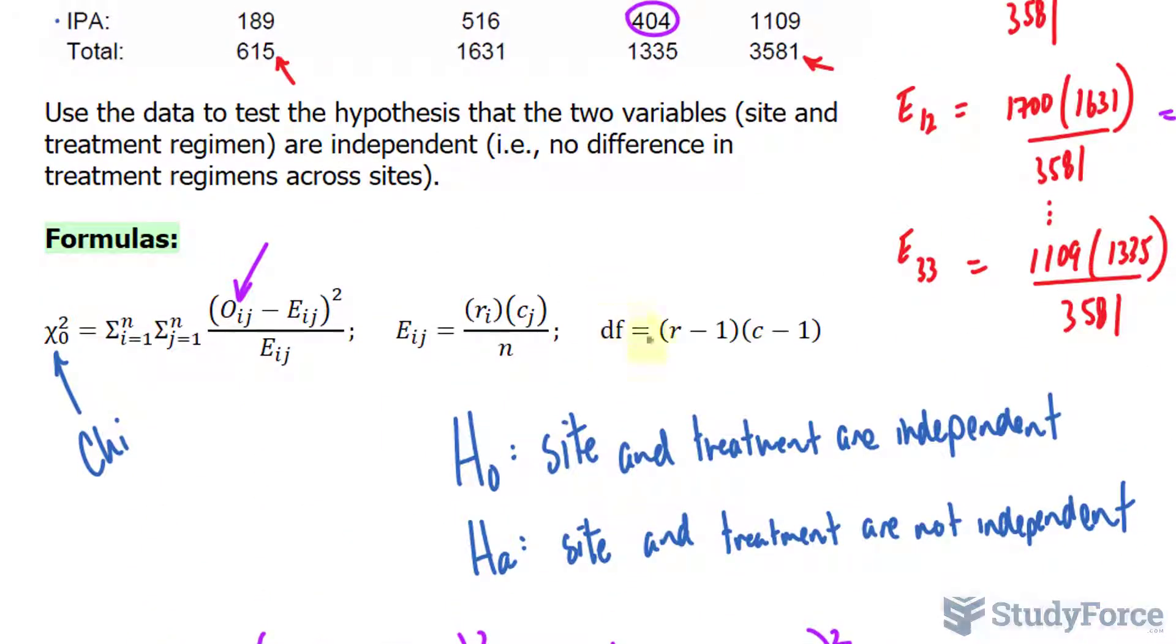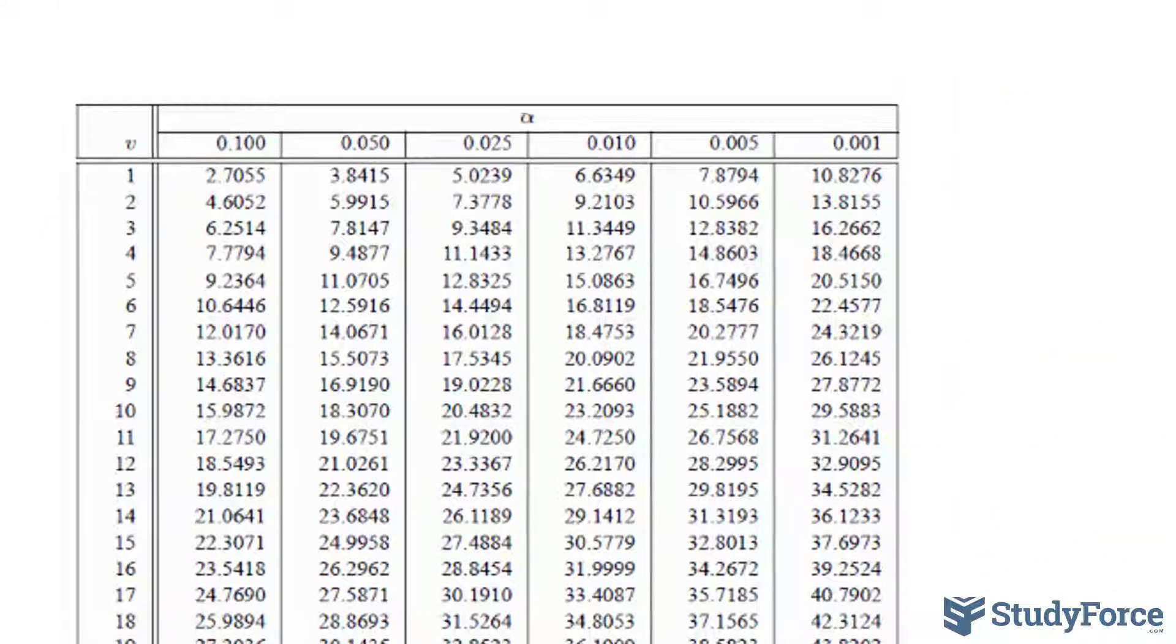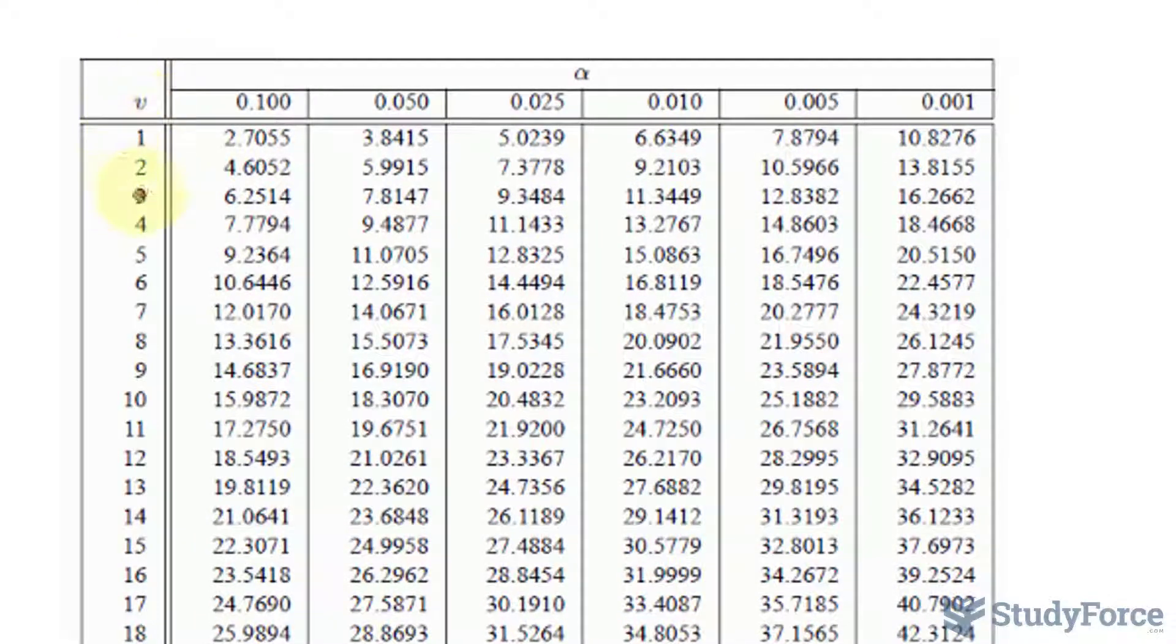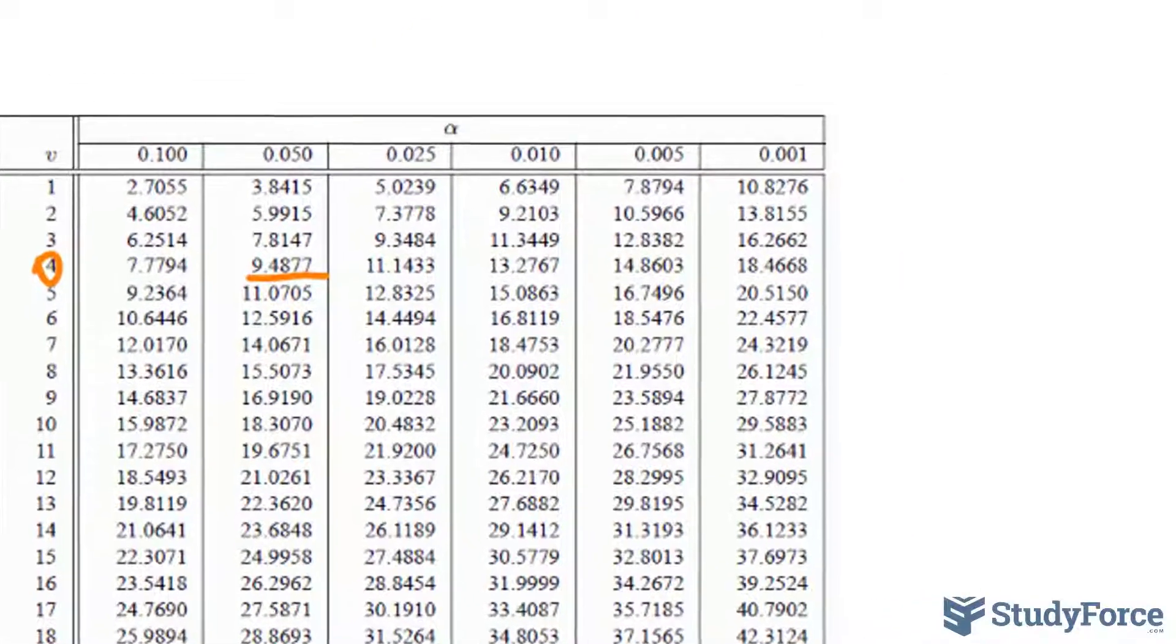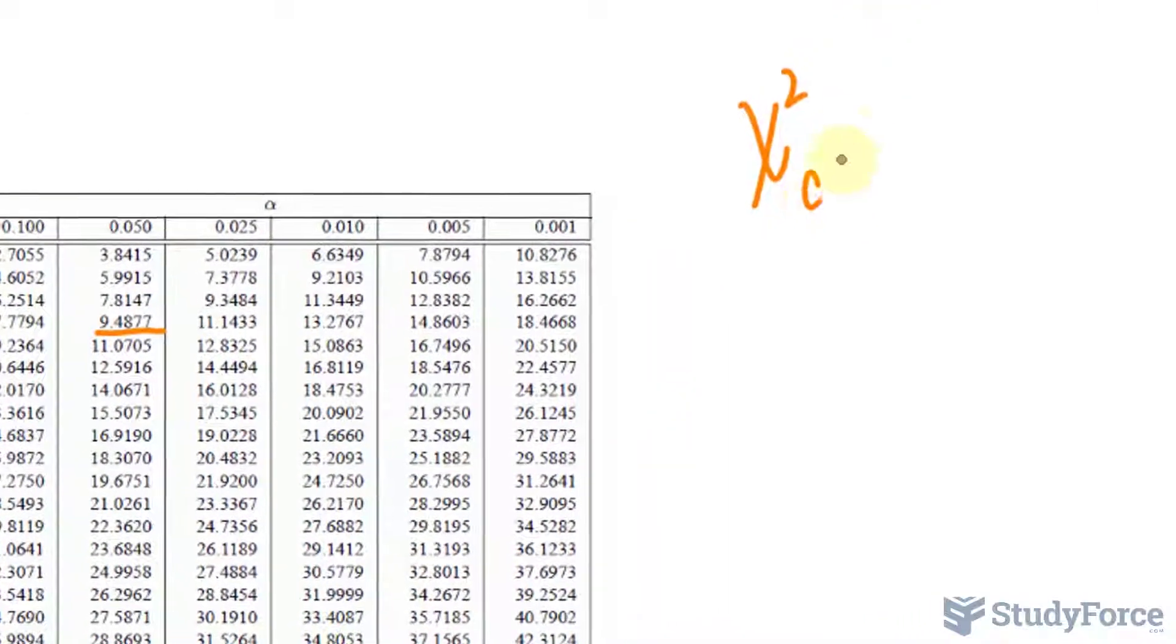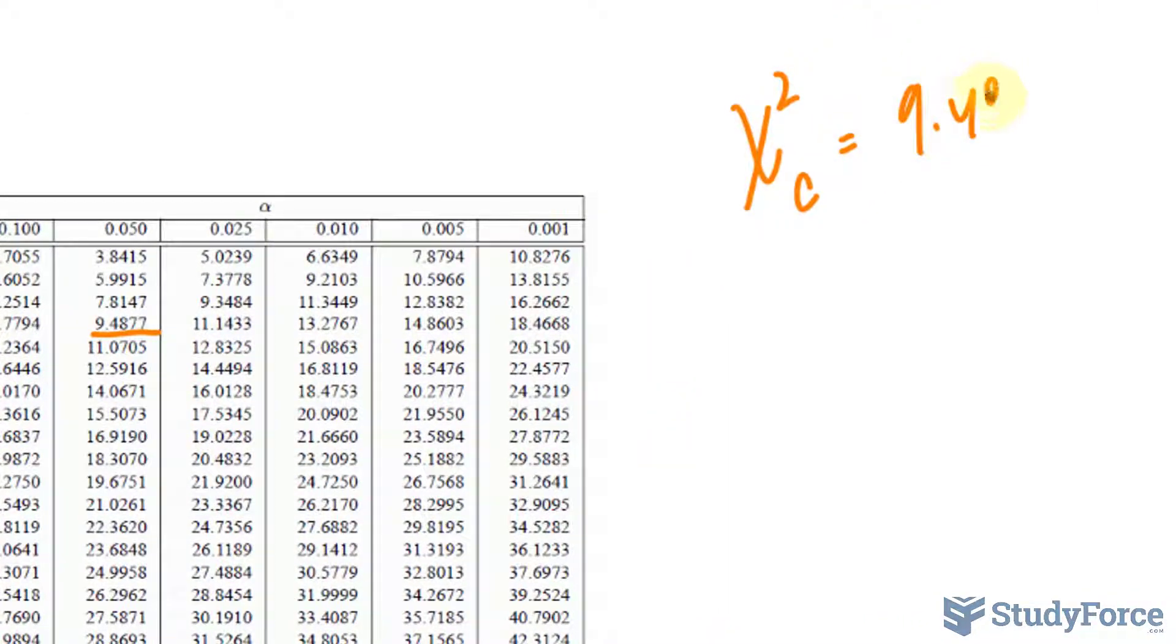We need to also calculate the degrees of freedom, and we'll use this formula. We have three rows, three minus one, and three columns, three minus one, that's two times two, which is four. And we'll use this table. So V here represents the degrees of freedom, it's four. Alpha is our significance level, zero point zero five. And that's our value, that's our chi-square critical, nine point four eight seven seven.